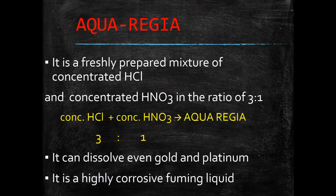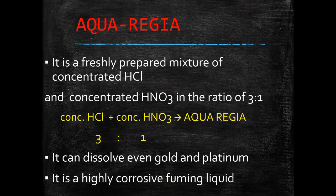Now the next topic is aqua regia. It is a freshly prepared mixture of concentrated HCl and concentrated HNO3 in the ratio of 3:1. It can dissolve gold, even though neither of these acids can do so alone. Aqua regia is a highly corrosive fuming liquid. It is one of the few reagents that is able to dissolve gold and platinum.